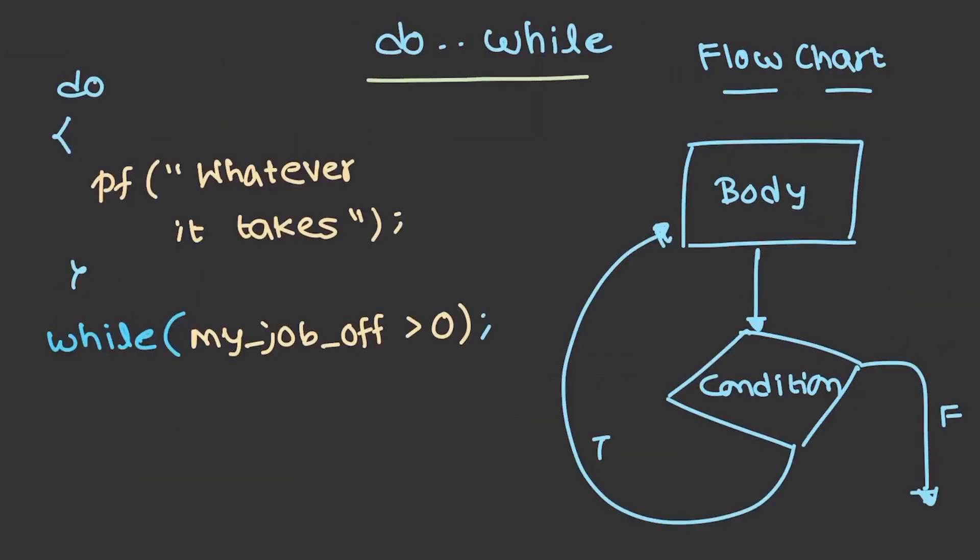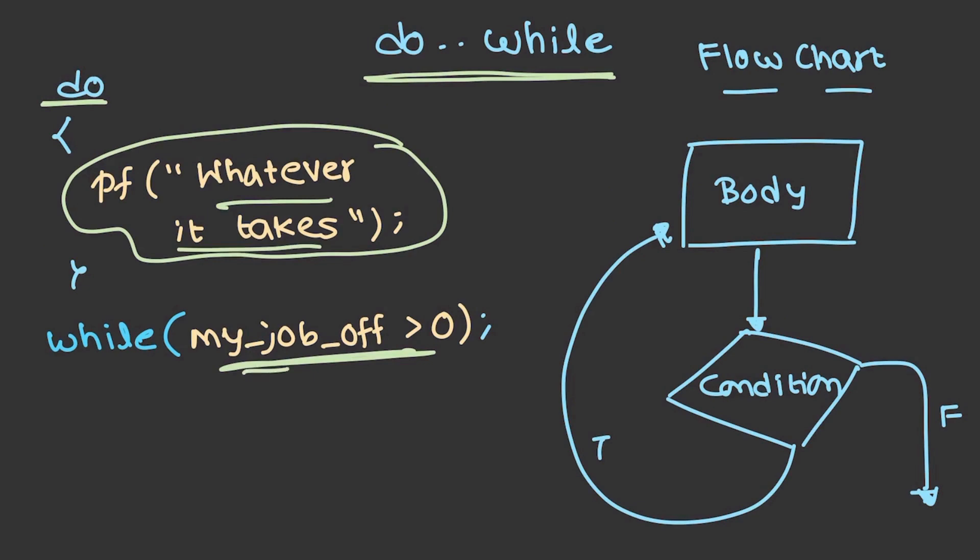Let's try to understand one more simple topic which is do-while. We have defined whatever is required inside the do and we have written a condition over here. You have taken a decision - whatever it takes, you will try to prepare till you get a job offer. Initially, the body will be executed, so no condition will be checked and whatever is inside the do loop, it will be printed. 'Whatever it takes' will be printed.